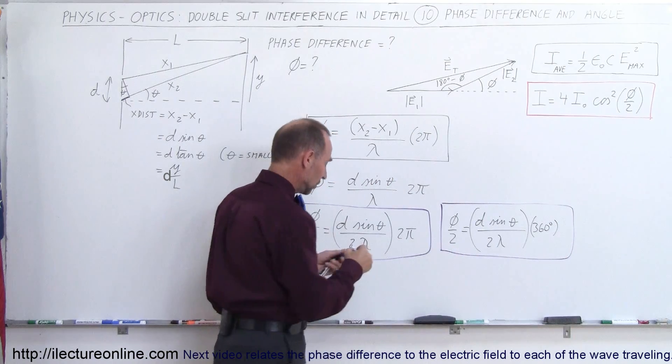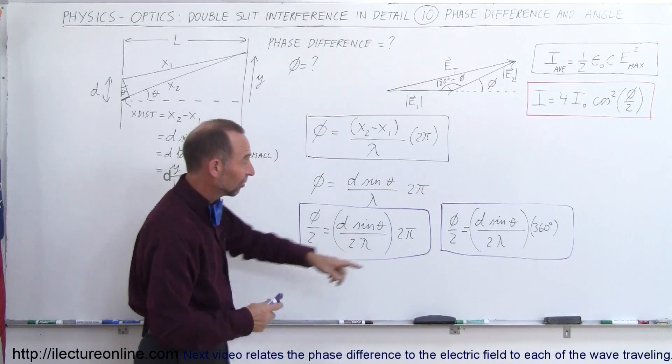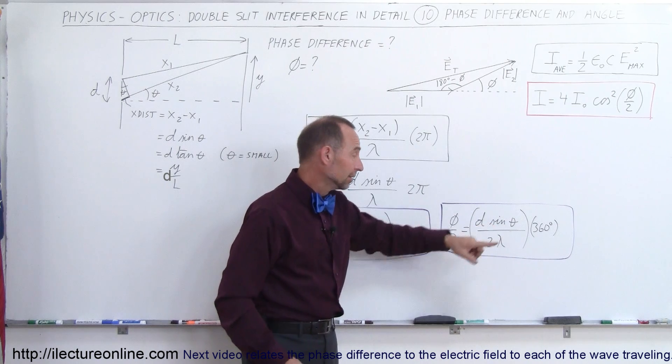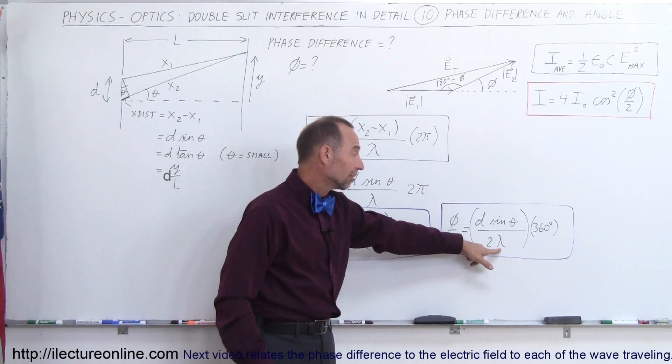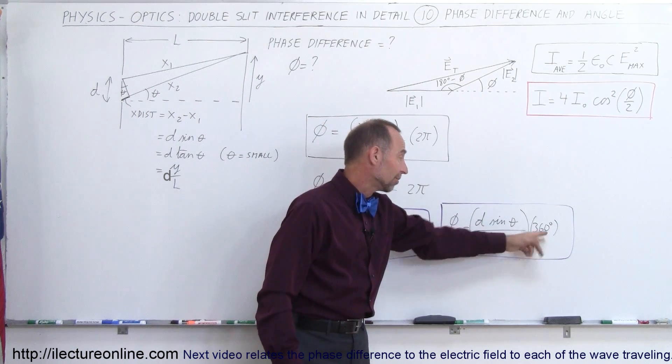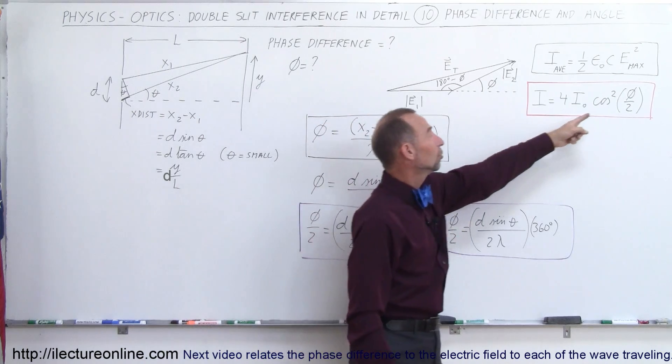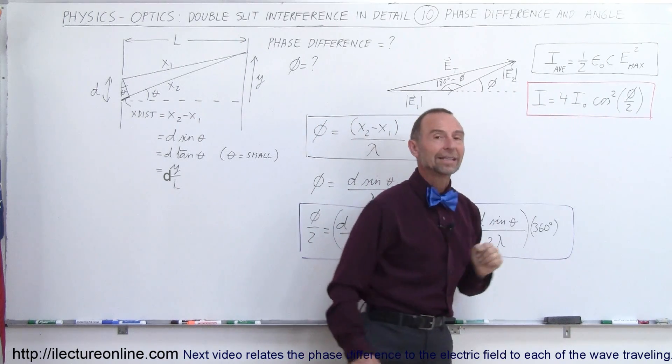So then all you have to do is find out what the slit distance is, d, find out what the angle is, theta, find out what the wavelength is, and then multiply it times 360, and that goes into this equation right here, so you can find the intensity.